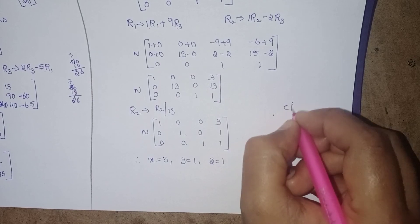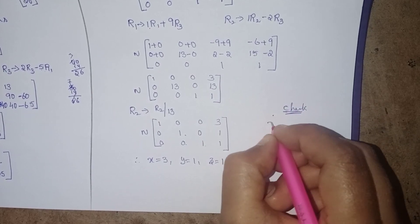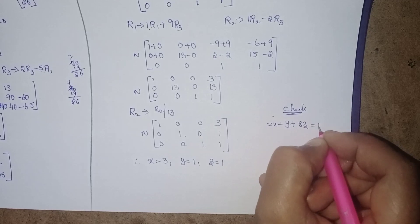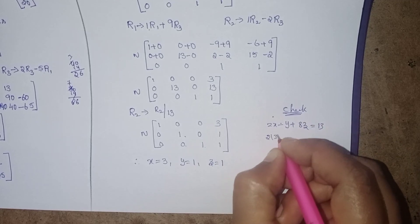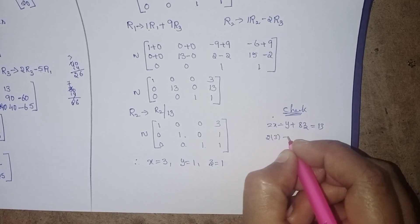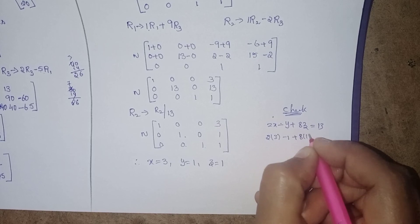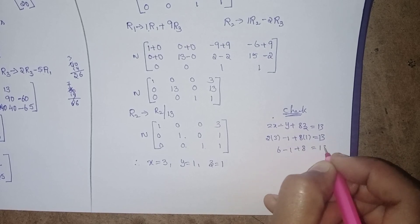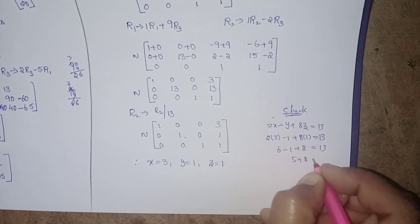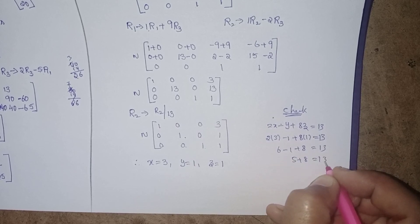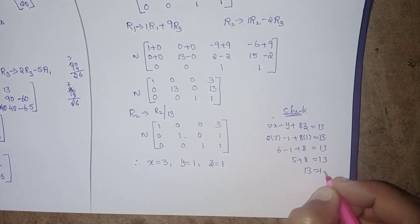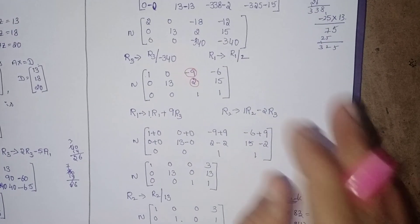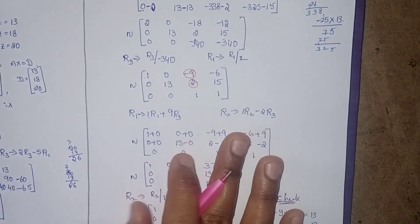Check: 2x minus y plus 8z equals 13. Substituting: 2×3 minus 1 plus 8×1 equals 13. That gives 6 minus 1 plus 8 equals 13, which is 5 plus 8 equals 13, so 13 equals 13. Our answer is correct. Thank you for watching my video, take care all of you.